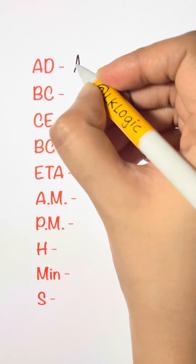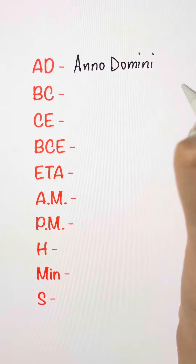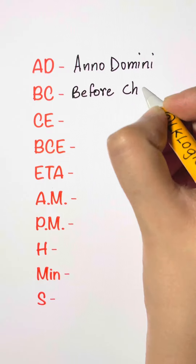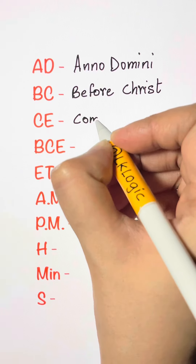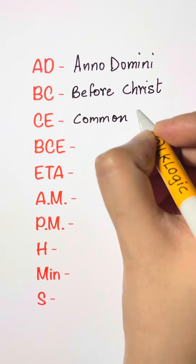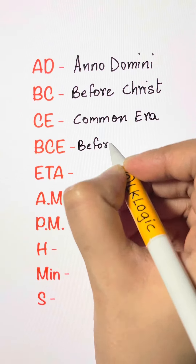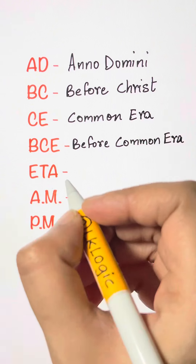A.D. — Anno Domini. B.C. — Before Christ. C.E. — Common Era. B.C.E. — Before Common Era.